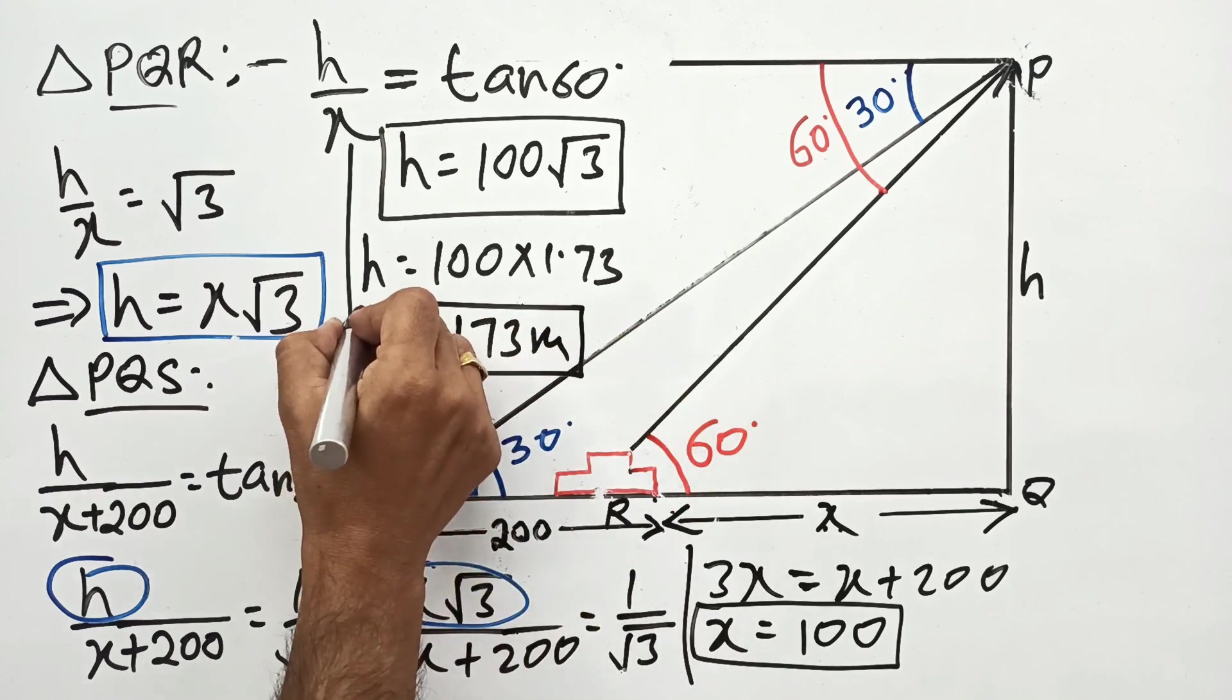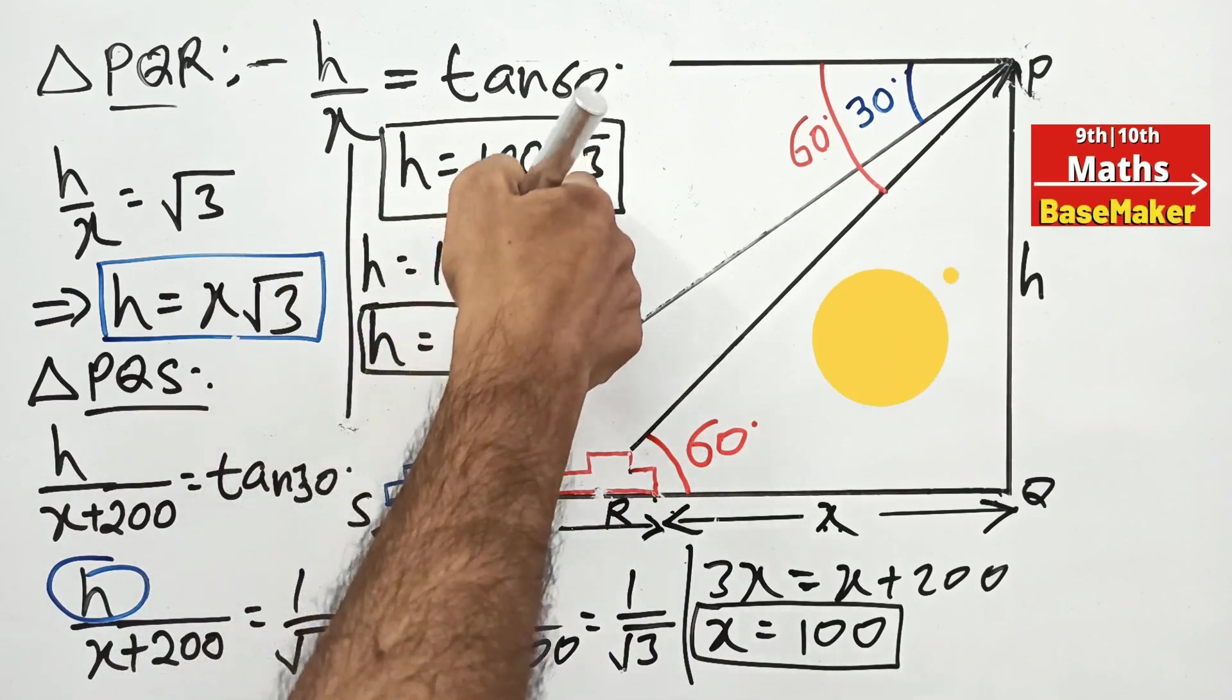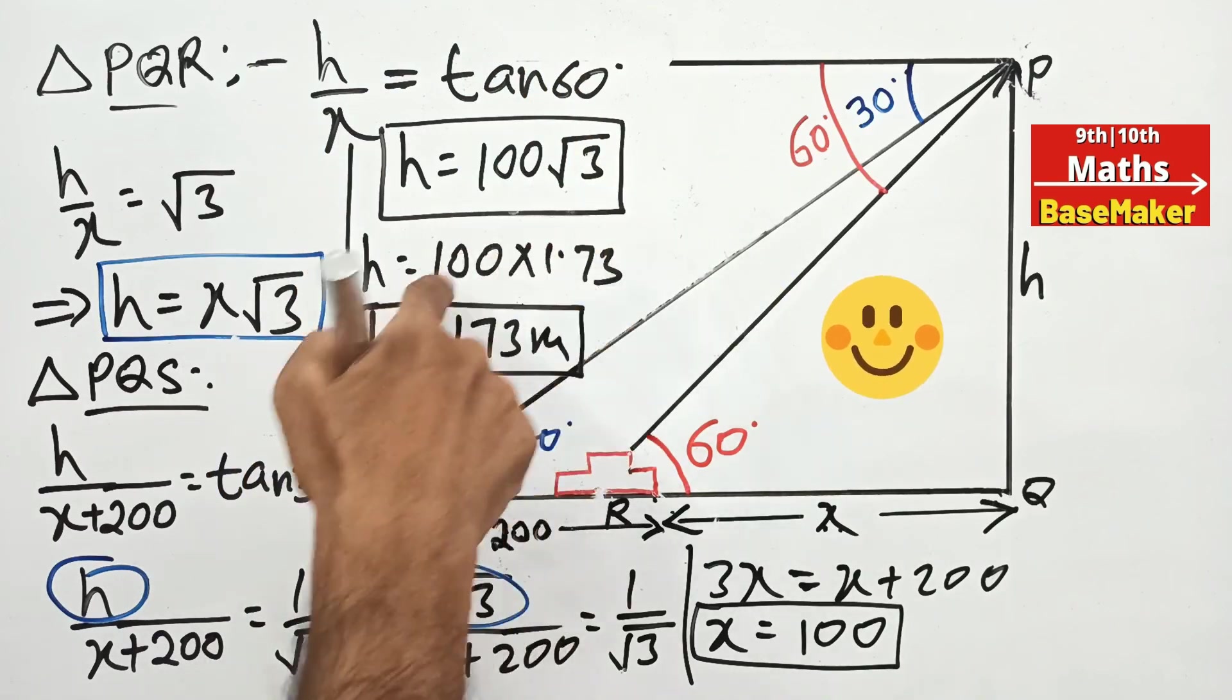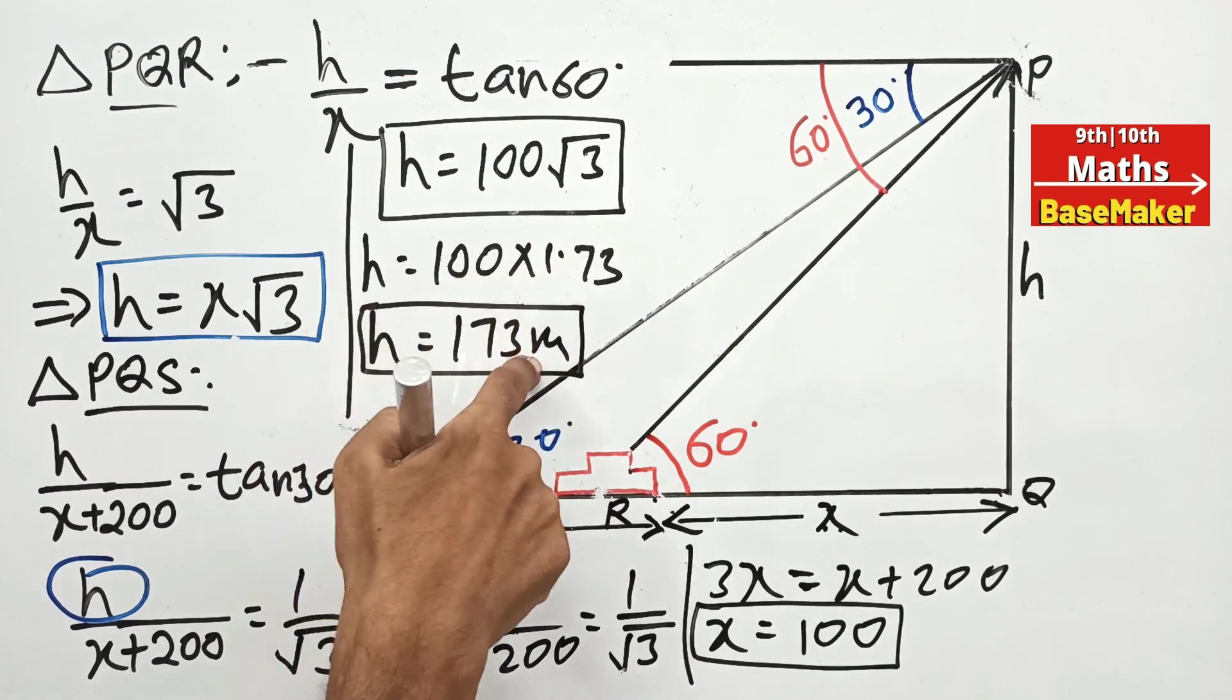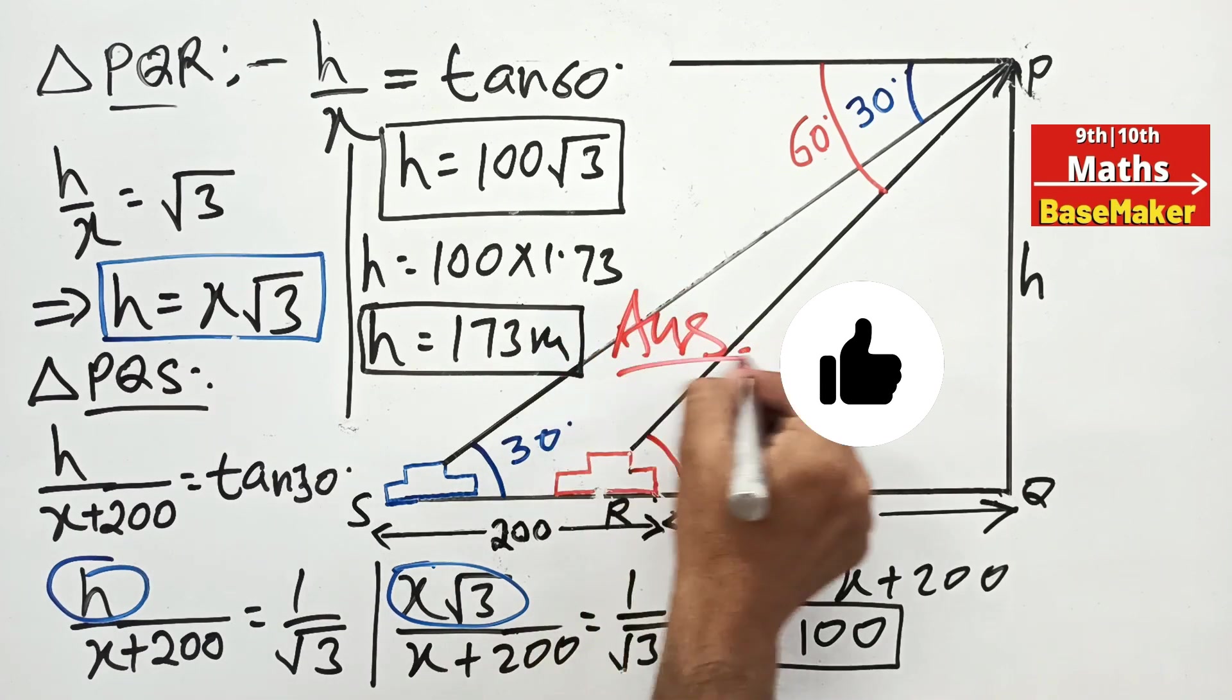Depending on the question, if the value is not given, you can retain this answer as 100 root 3. If the value of root 3 is given as 1.73 or whatever, you can multiply to get 173. This is the answer.